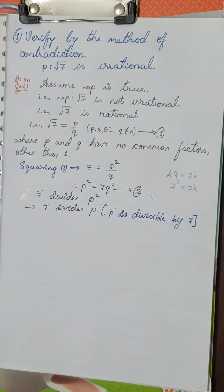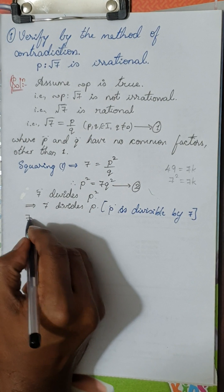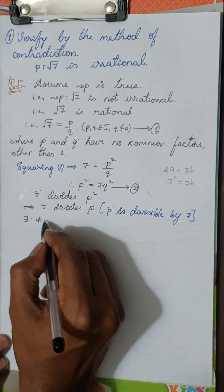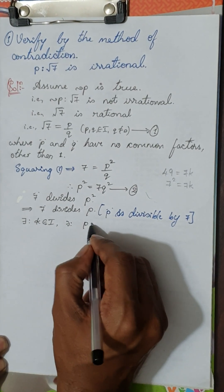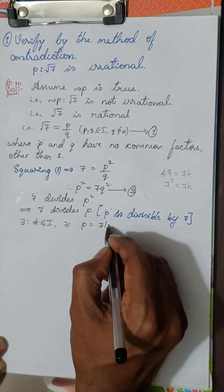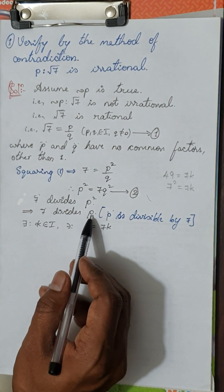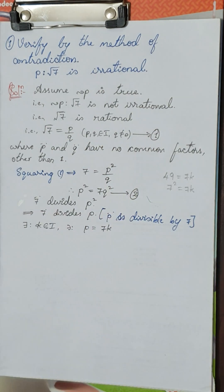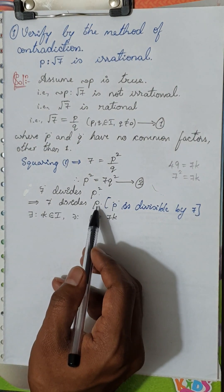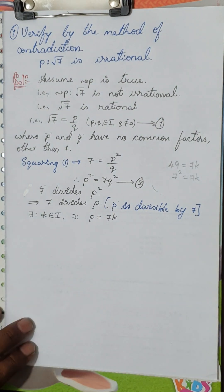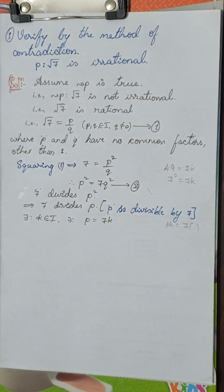What do we mean by 7 divides P? There exists another integer K such that P can be written as 7 times K. For example, if 7 divides 14, then 14 can be written as 7 times some constant. That is the logic we will use.